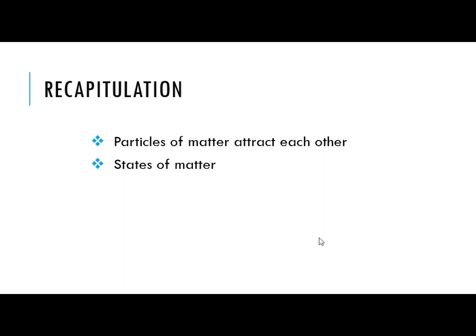Next, states of matter. We have learnt that there are three states of matter. Can you tell me which are those? Solid, liquid and gaseous state. These are the three states of matter which we have learnt. Apart from that, we are having two more states of matter which we are going to learn at the end of this chapter.